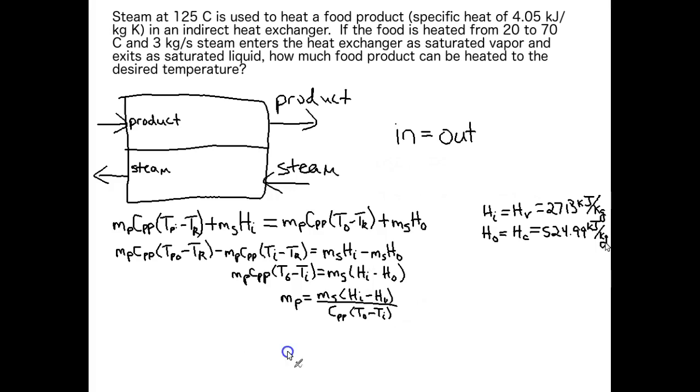Now that we have all our numbers, let's go back to our equation for the mass of our product, plug everything in, and see what we get. And there you have it—we can heat almost 32 and a half kilograms per second of product with this amount of steam.